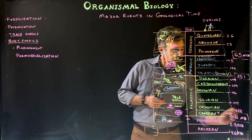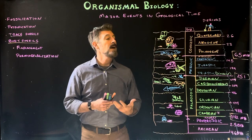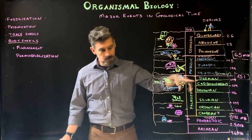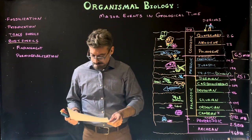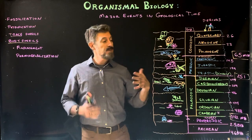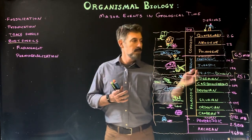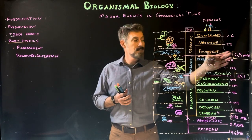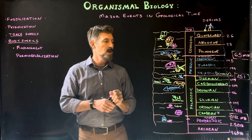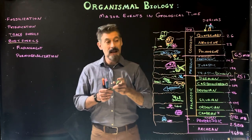Eras are separated time-wise often by major extinction events—something changed that caused a large number of organisms to disappear. For example, going from the Paleozoic to the Mesozoic, there was a huge extinction: about 95% of marine species and about 50% of most families of animals gone from the fossil record. Similarly, around 65 million years ago we have the extinction of the dinosaurs, which marks the beginning of the Cenozoic era.